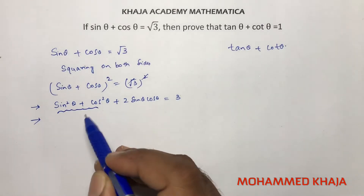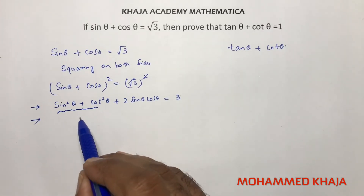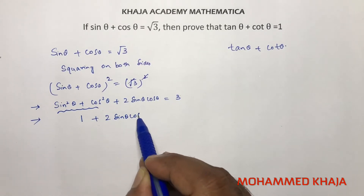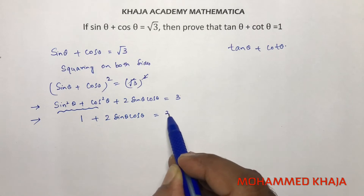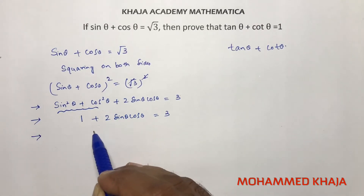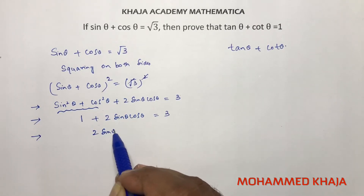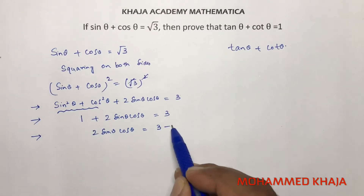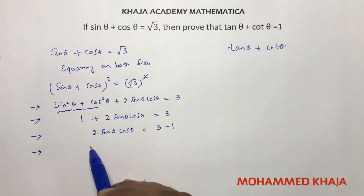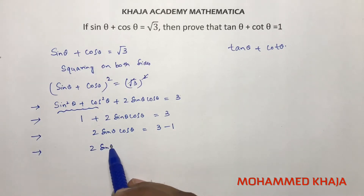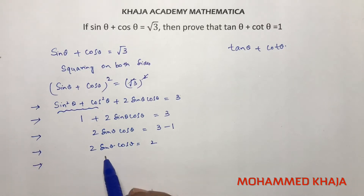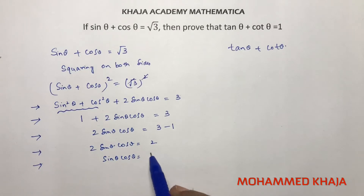Using the identity sine square plus cos square equals 1, we get 1 plus 2 sine theta cos theta equals 3. Transposing the 1, we get 2 sine theta cos theta equals 2.